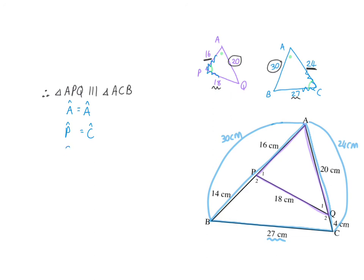Then angle Q equals angle B, once again formed from the same corresponding sides. For all three angle equalities, the reason is similar triangles.